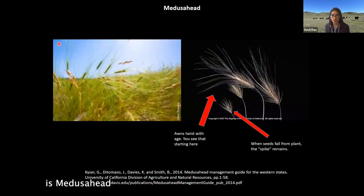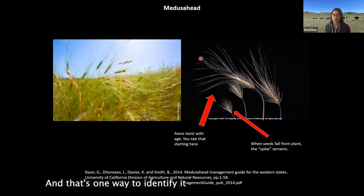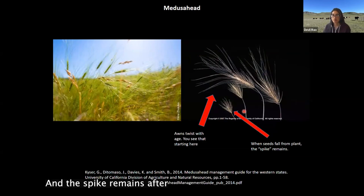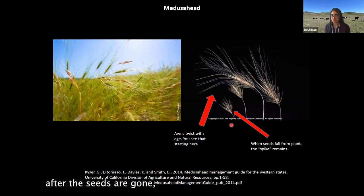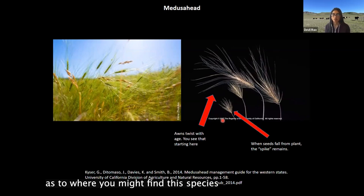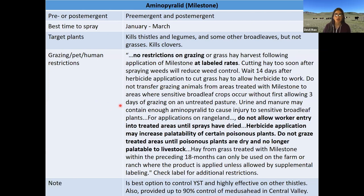Another plant is medusahead, a grass. It has very long awns — that's one way to identify it. Once they start drying, the awns begin twisting, kind of like the hair of Medusa, which is likely why it's called medusahead. When seeds fall from the plant, the spike remains after the seeds fall off, so you can still identify the plant. These spikes can remain even into the next year, so in spring you can see skeletons from the previous year showing where plants had been.